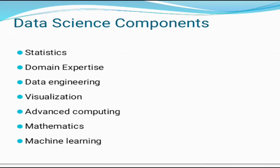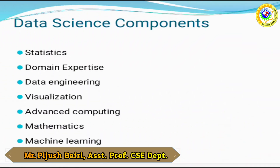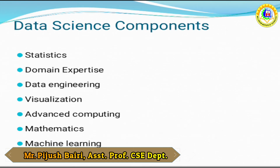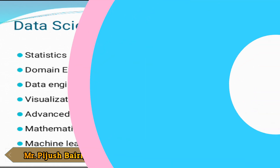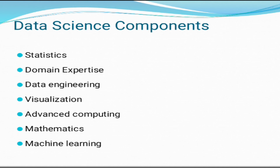The next component is data engineering. Data engineering is a part of data science which involves acquiring, storing, retrieving, and transforming the data. Data engineering also includes metadata of the data. Next is visualization. Data visualization is represented by presenting data in a visual context so that people can easily understand the significance of data, and it makes it easy to access huge amounts of data visually.